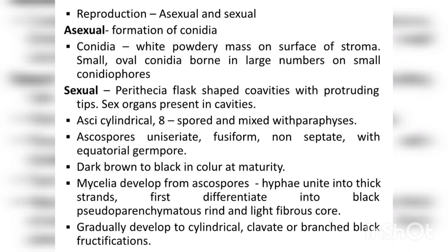Sexual reproduction takes place by the formation of ascospores. These ascospores are borne inside perithecia, which is a flask-shaped structure with a cavity inside. The sex organs are present inside this cavity. The sexual spores are borne in sac-like structures called asci. The asci are cylindrical, and each ascus consists of eight ascospores. The asci are mixed with sterile paraphyses — sterile hyphae seen inside along with the asci.